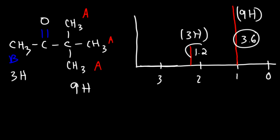The ratio of the integral trace of the two signals is proportional to the ratio of the protons that make up those two signals. So if we divide 3.6 by 1.2, that will give us 3. And if we divide 9H by 3H, that will also give us 3.